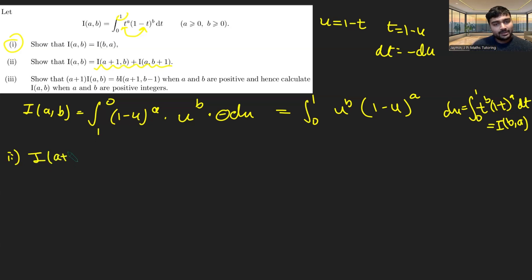We've got I(a+1,b) plus I(a,b+1). And if we just write these as they're using the definition of them as integrals, the first one is just going to be t to the a+1, 1 minus t to the b. And if I add on the second one, well, because they're both integrals between zero and one, I can just bring them all into one integral. It'll be plus t to the a, 1 minus t to the b+1 dt, like so.